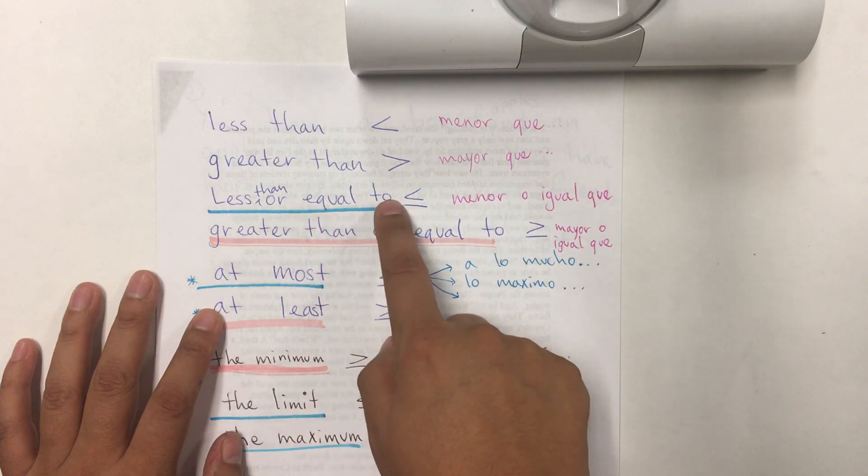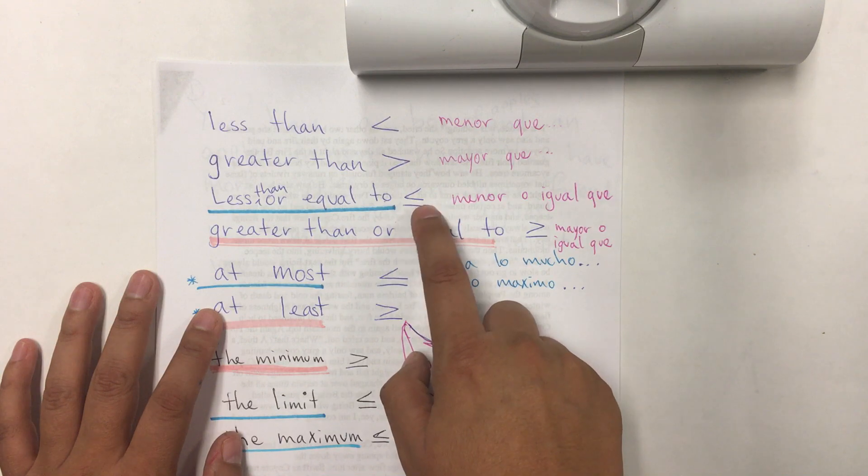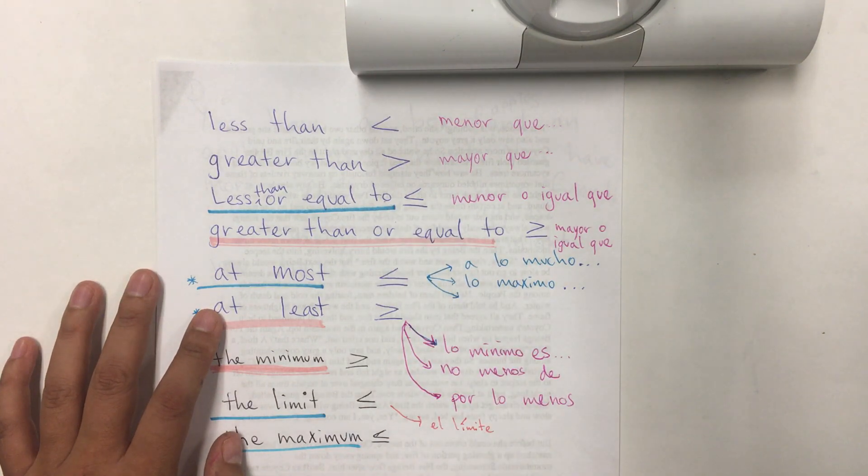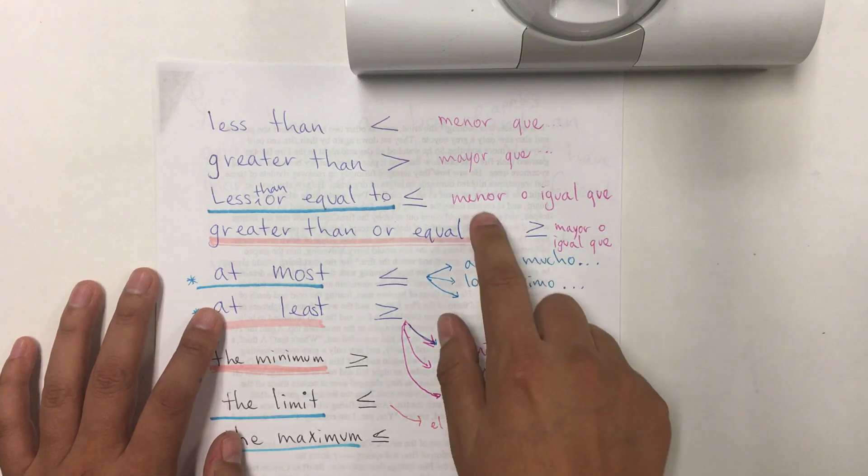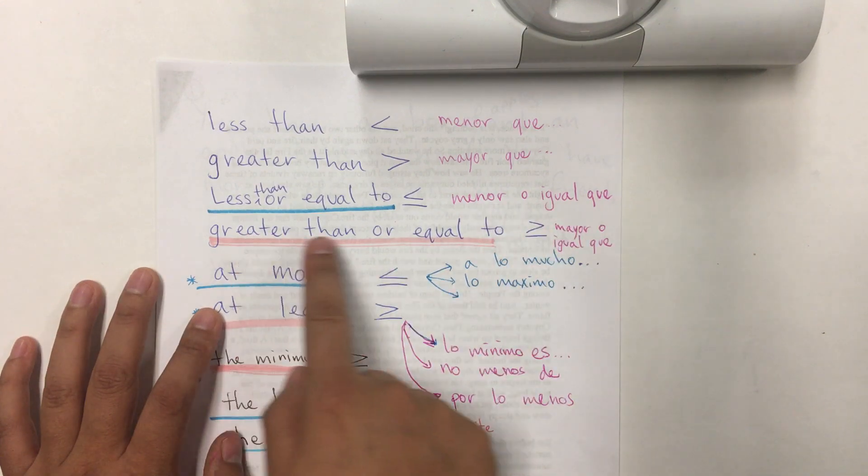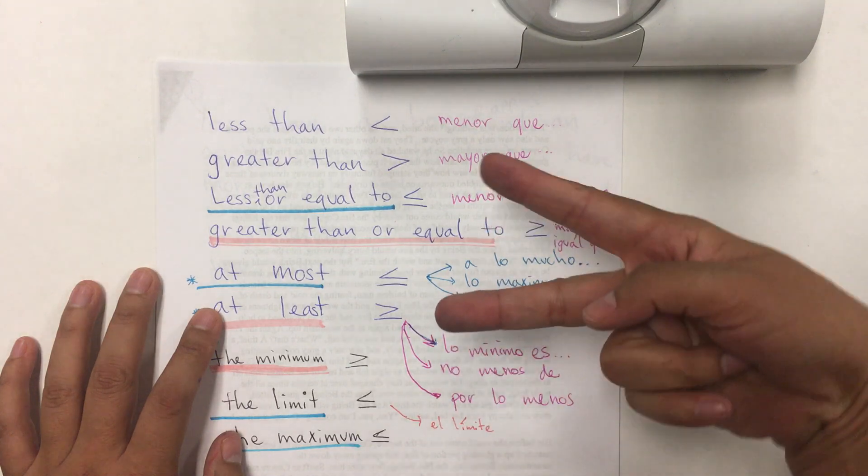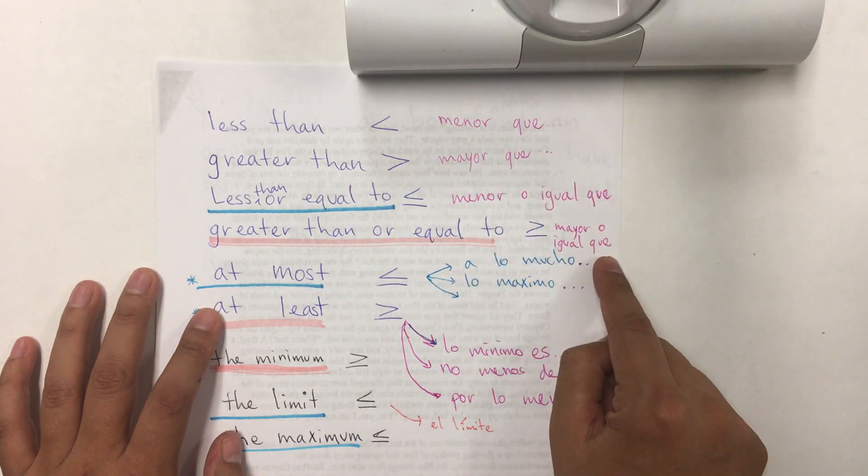Less than or equal to is less than or equal. It means it includes that number, or lower than that. In Spanish, it's menor o igual que. Greater than or equal to, it's greater or equal, mayor o igual que.